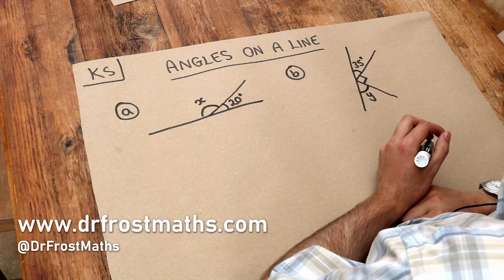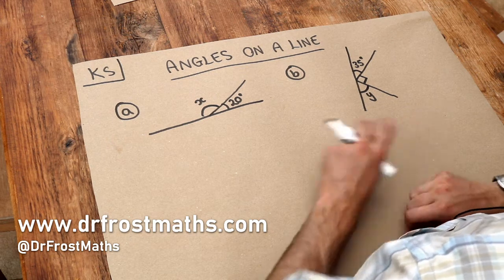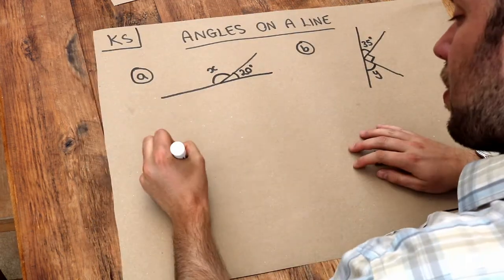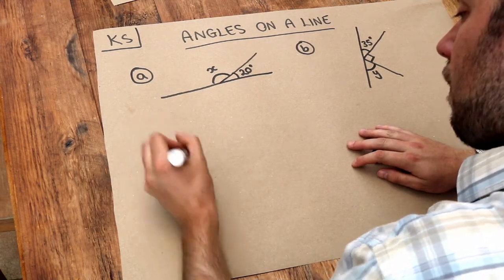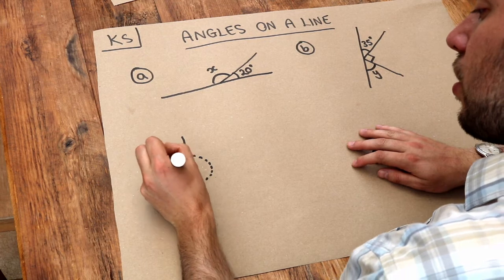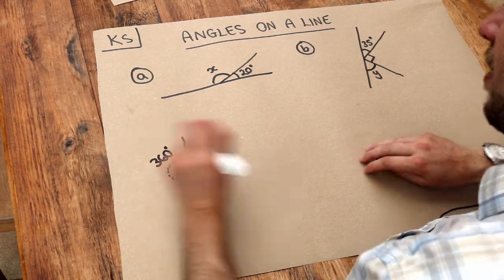Hello and welcome to this Dr Frost Maths key skill video on angles on a line. In the previous video we explored the angles around a point and if you considered the full spin around a particular point you would have rotated 360 degrees.